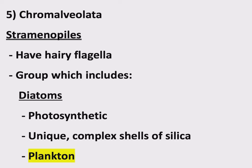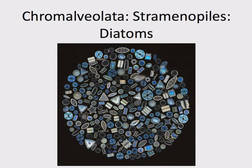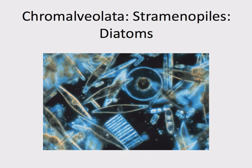Diatoms are photosynthetic and very beautiful looking, if I'm being honest. Lots of cool unique shapes — triangles, circles, ovals, spirals, stars. Here's another image just showing the diversity of different shapes they can have. They are photosynthetic, they are planktonic, and they have unique complex shells made of silica.